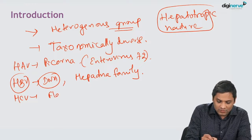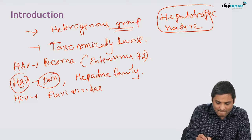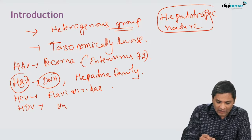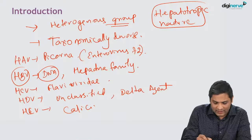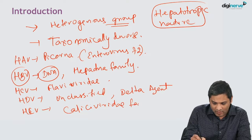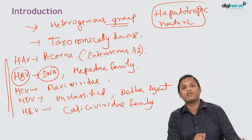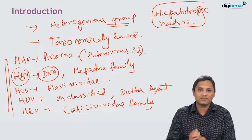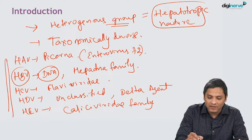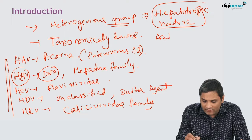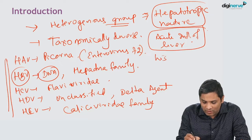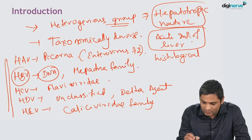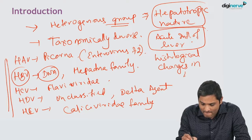Hepatitis C virus belongs to the Flaviviridae family. Hepatitis D is an unclassified virus, also called the delta agent. Hepatitis E belongs to the Caliciviridae family. So hepatitis A through E are five taxonomically distinct viruses, discussed together because they are hepatotropic and cause acute inflammation of the liver with characteristic histological changes.